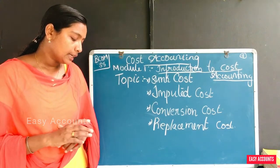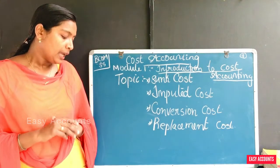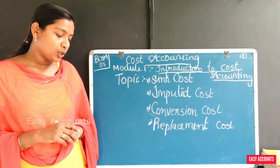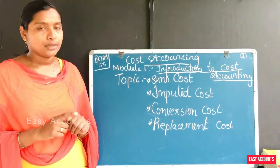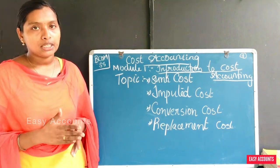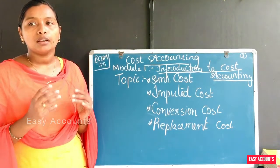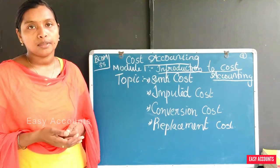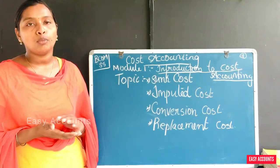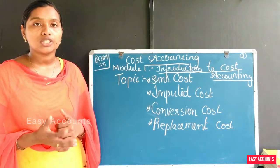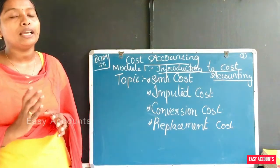Conversion cost is the cost of converting direct materials into partly or fully finished products, or from one stage of production to the next. We have raw materials in our business, and these raw materials are converted into finished products through multiple stages. The cost incurred in converting materials from one stage to the final stage is the conversion cost.